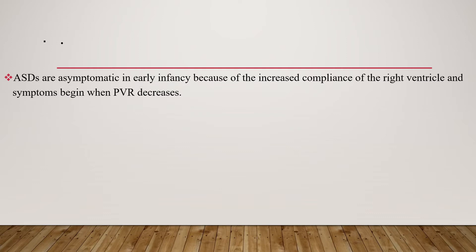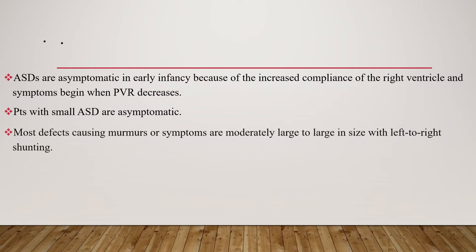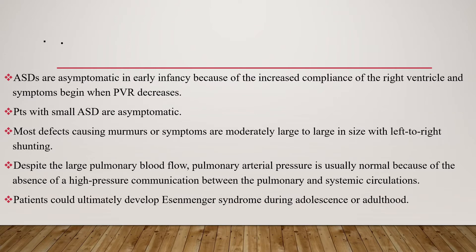Atrial septal defects are asymptomatic in early infancy because of the increased compliance of the right ventricle, and symptoms begin when pulmonary vascular resistance decreases. Patients with small ASD are asymptomatic, and most defects causing murmurs or symptoms are moderately large to large in size with left-to-right shunting. Despite the large pulmonary blood flow, pulmonary arterial pressure is usually normal because of the absence of high-pressure communication between the pulmonary and systemic circulation. Patients could ultimately develop Eisenmenger syndrome during adolescence or adulthood.